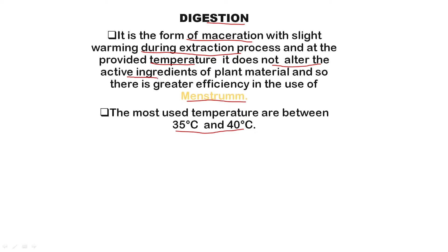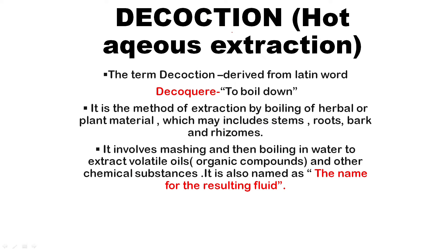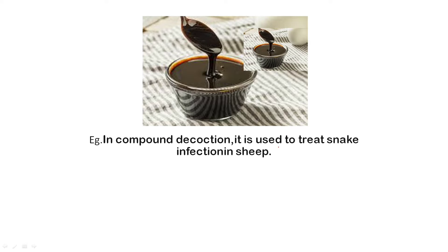Decoction is called hot aqueous extraction — from the Latin 'decocere', meaning to boil down. The active ingredients are extracted by boiling herbal plant parts such as stem, root, bark, and rhizomes. This procedure is easy to apply; we simply boil the plant material in water to extract the constituents.